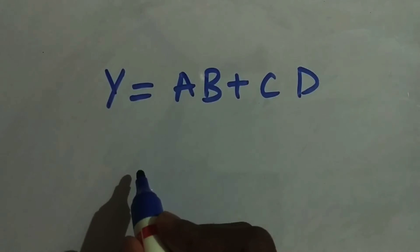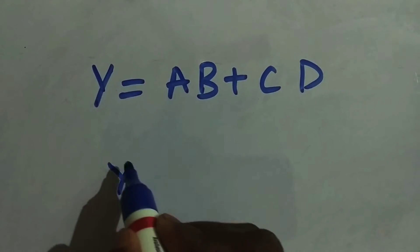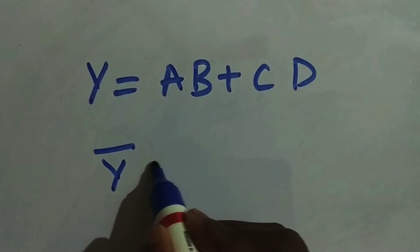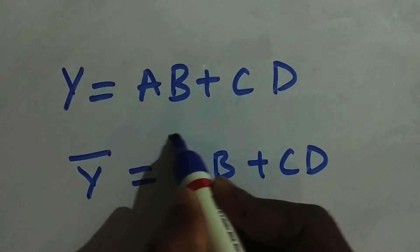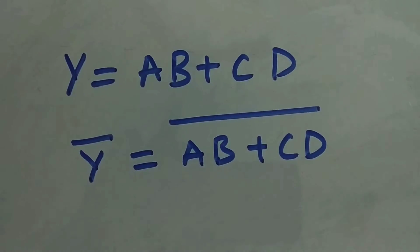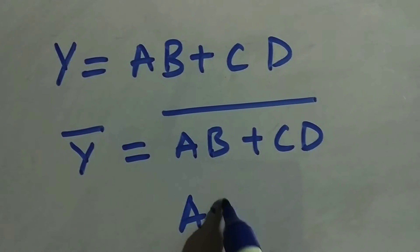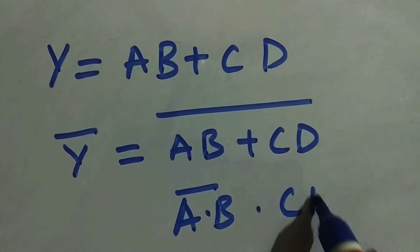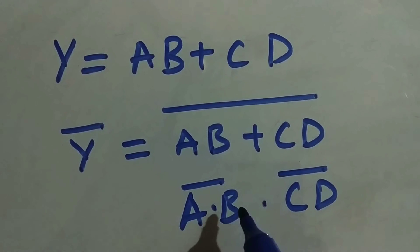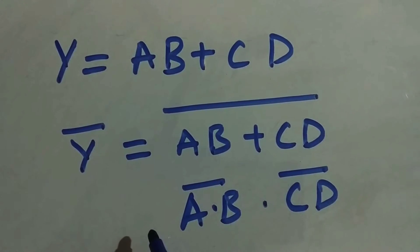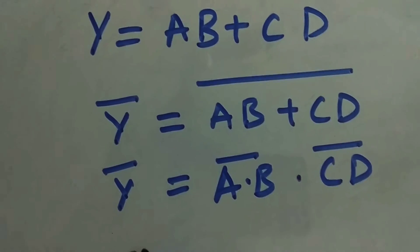The first step is to complement whatever expression you have, giving Y bar. So the complemented expression is AB plus CD, whole bar. Now apply De Morgan's law. It becomes AB whole bar dot CD whole bar. This is what the expression looks like after applying De Morgan's theorem.